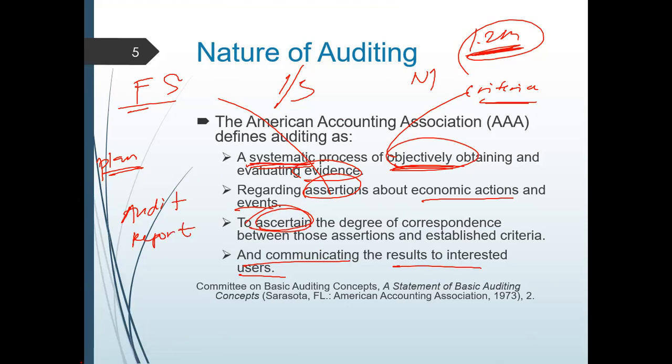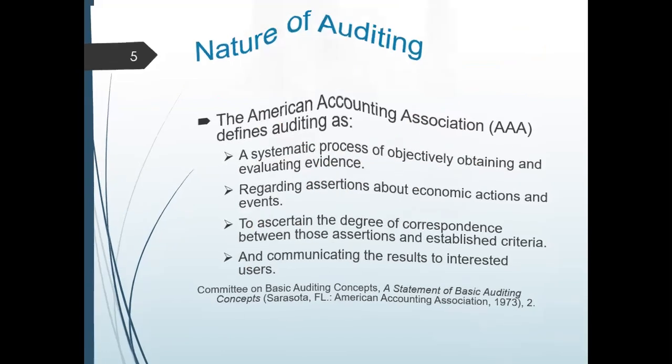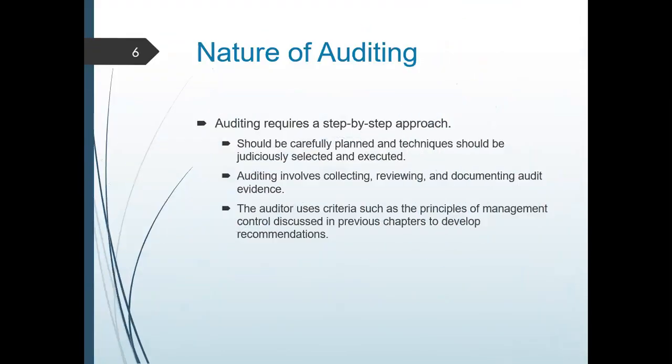If you go back to your auditing theory, you have four types of opinion: qualified, adverse, disclaimer, and your unqualified. The best opinion would be your unqualified, meaning your FS are fairly stated without any material misstatement, and it is reported according to the standards given by the reporting standards council. That's the nature of your audit.